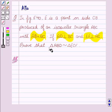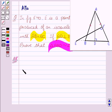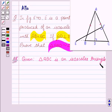we have to prove that triangle ABD is similar to triangle ECF. Let's start with the solution. We are given that triangle ABC is an isosceles triangle, and we know that in an isosceles triangle, two sides are equal. We are given that AB equals AC.